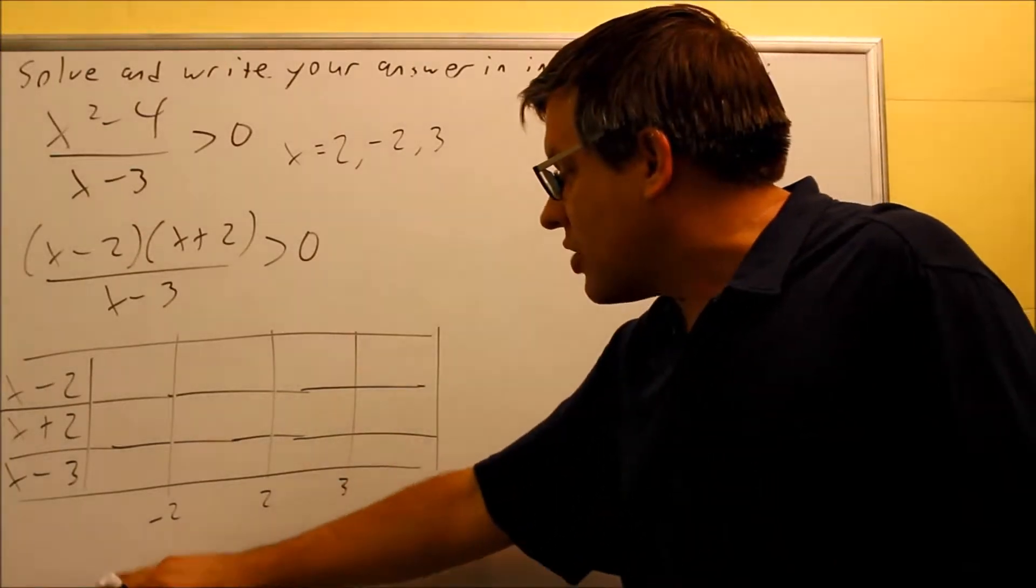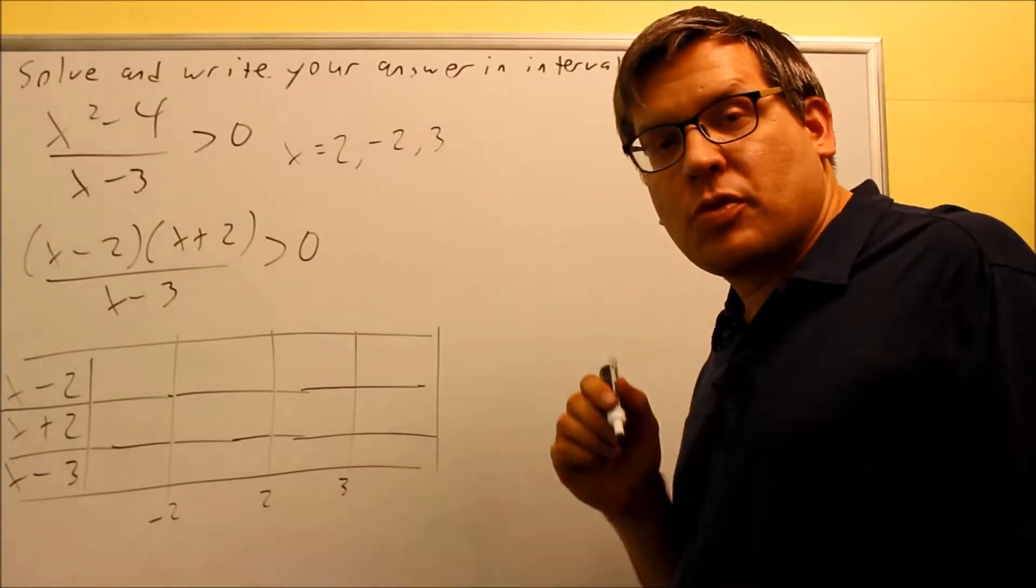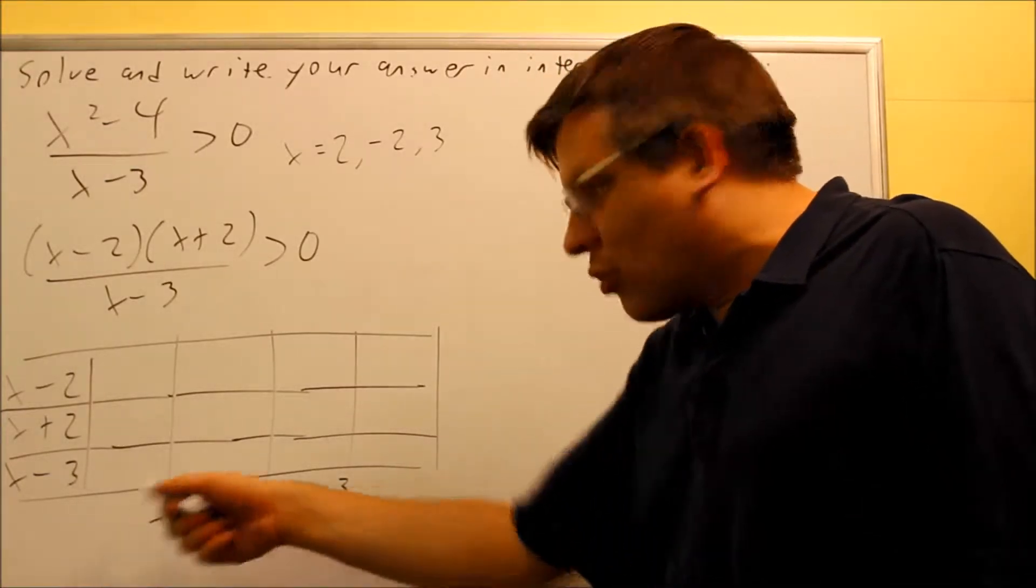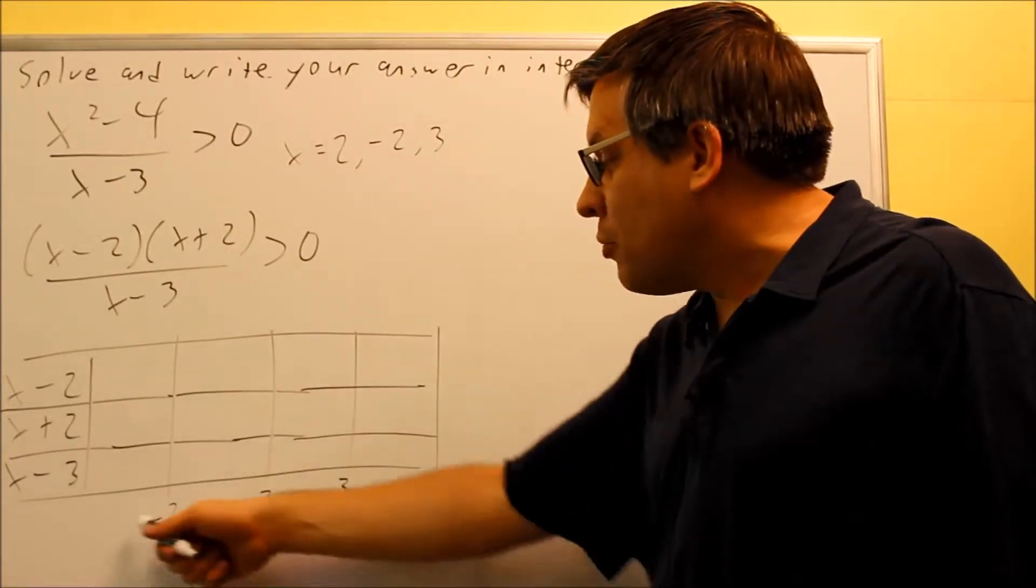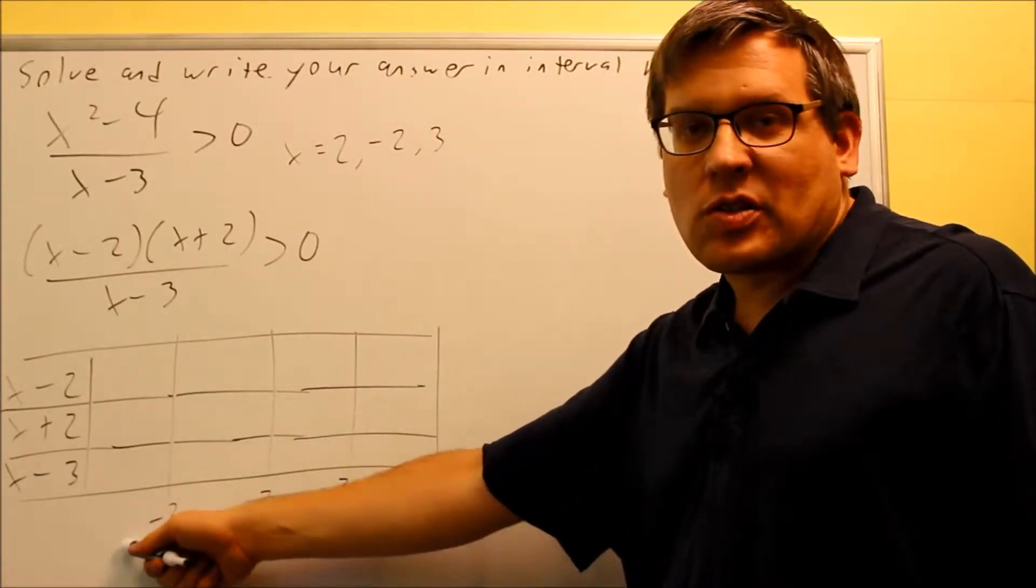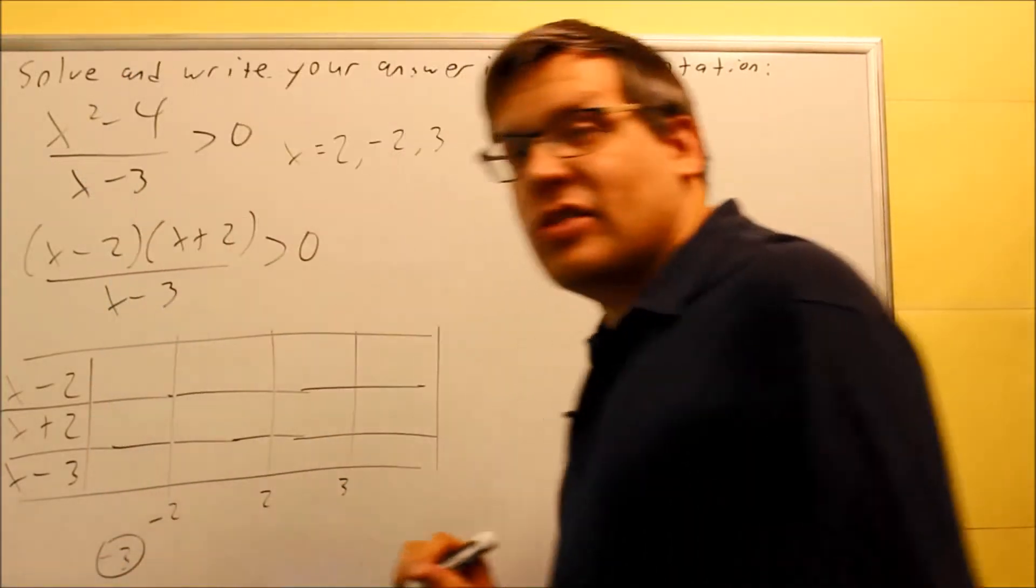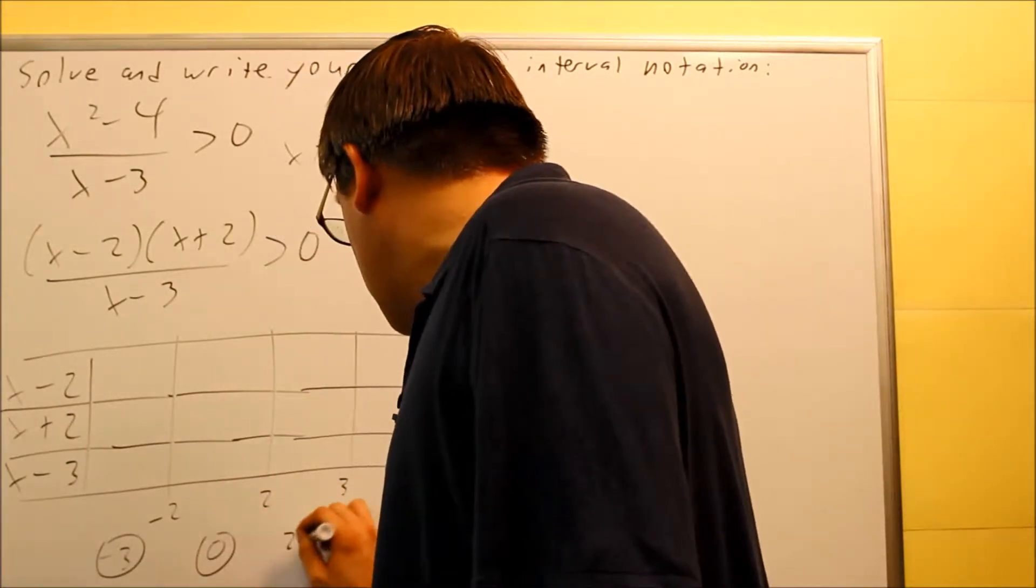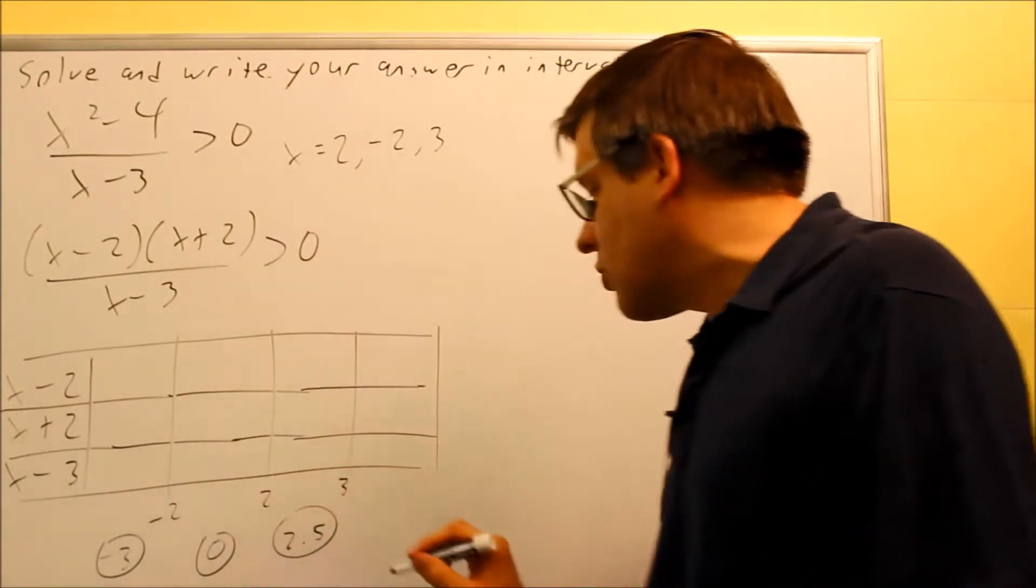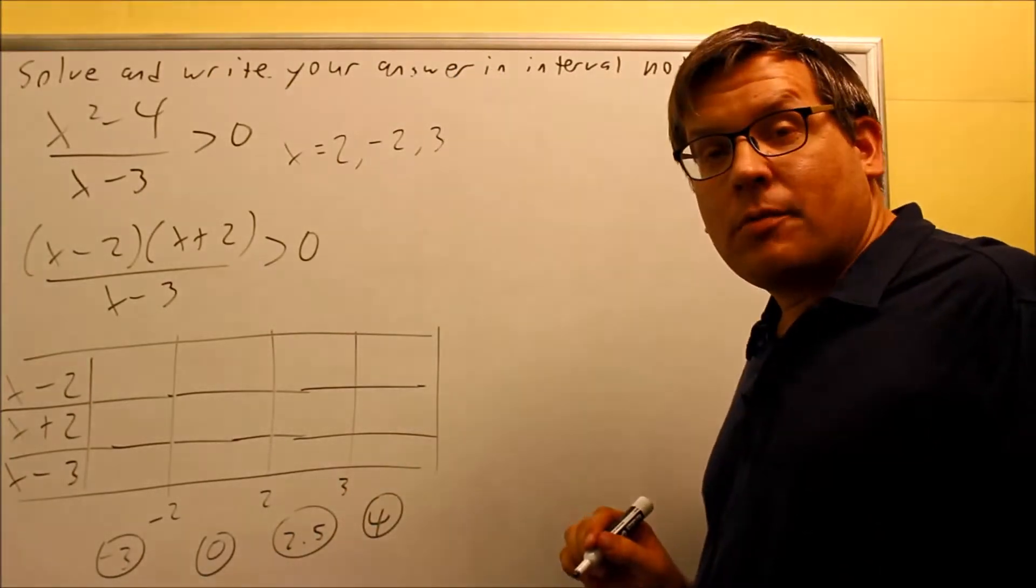I want to pick test numbers that fall in each of these regions. This is actually where I see people make the most mistakes, is they actually put a round number in there that's not in that correct interval. So sometimes I'll have people might put negative 1 in here instead, and we know that's not right. We need to put negative 3. It's got to be less than negative 2. In between these numbers, we're going to use 0. 2.5 we can use for the next one. And then we're going to use 4 for the last one there.